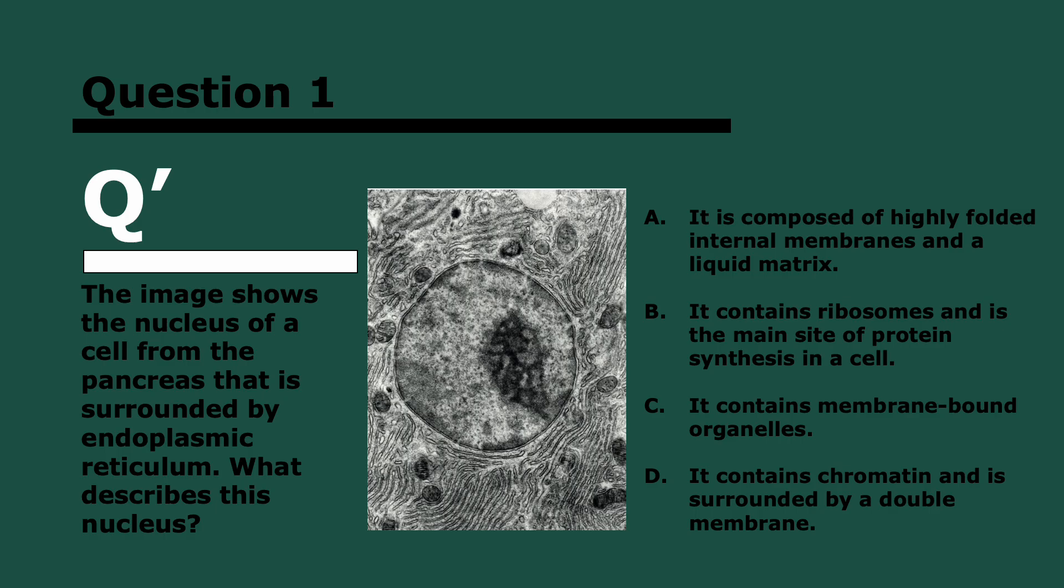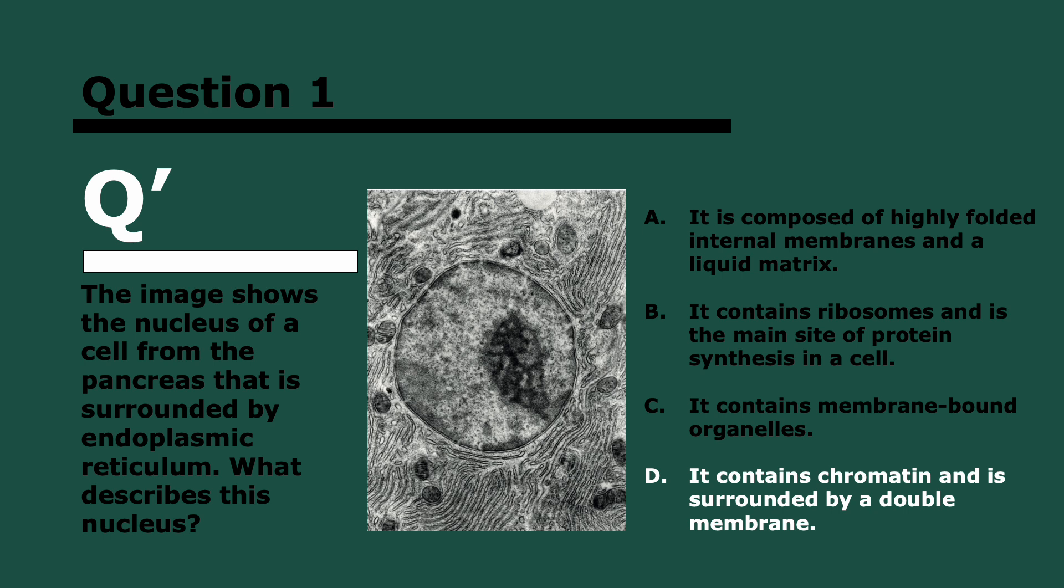Starting off with question one. You'll see a lot of these are repeated in the higher level if you looked at that video. The image shows the nucleus of a cell from the pancreas that is surrounded by endoplasmic reticulum. What describes this nucleus? Three, two, and one. It contains chromatin, that's DNA, and it's surrounded by a double membrane. It is not composed of highly folded internal membranes, it does not contain ribosomes, and it doesn't contain organelles. It does contain DNA and has a double membrane.